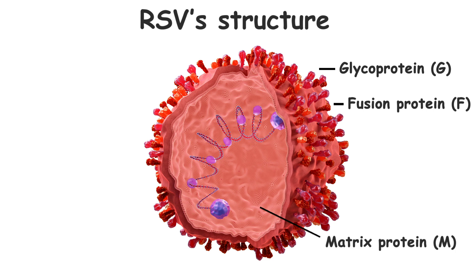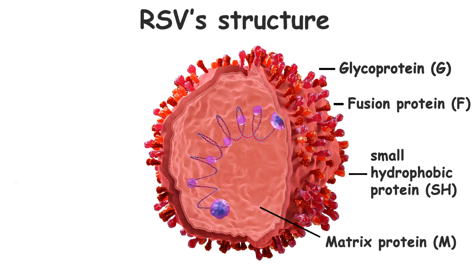Then there's the matrix protein, the structural backbone of RSV. It organizes the assembly of the virus, orchestrating the coming together of various components to form a new viral particle. Lastly, the small hydrophobic protein — a bit of a mystery player in RSV. Though its role isn't fully understood, it's thought to be involved in disrupting the host's cellular processes and evading immune responses.